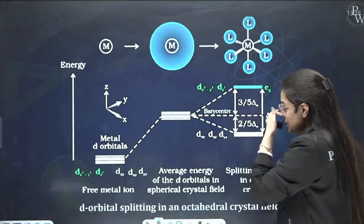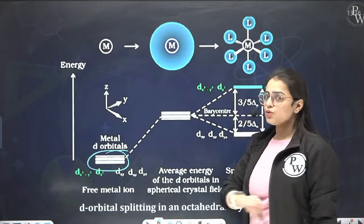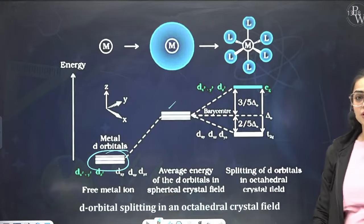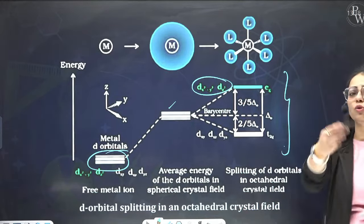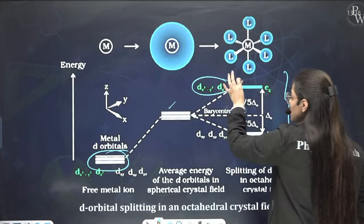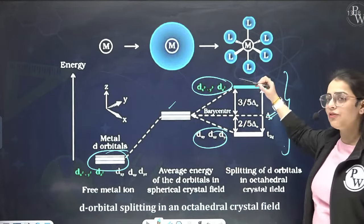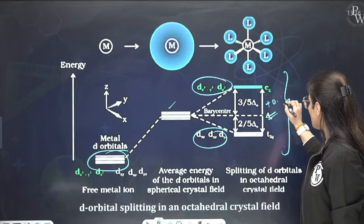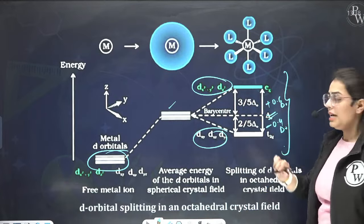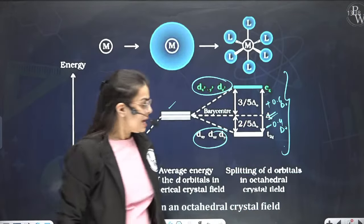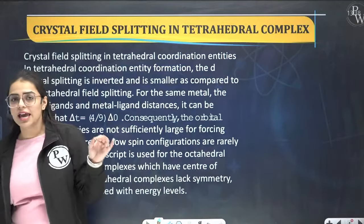In the octahedral crystal field splitting diagram, the five d orbitals initially have the same energy. When the ligands approach, their degeneracy breaks down. dx²y² and dz² have more energy — above the barycentre by +0.6 delta-naught — and dxy, dyz, dzx have less energy at −0.4 delta-naught. Here 'O' in delta-naught stands for octahedral complex.